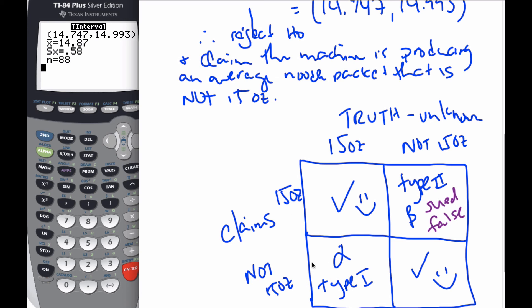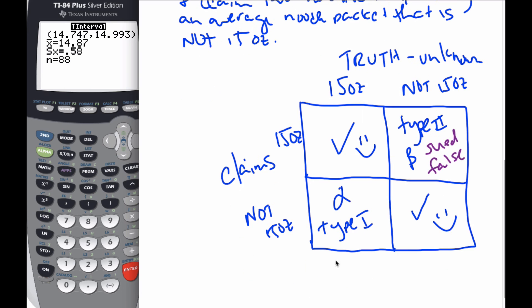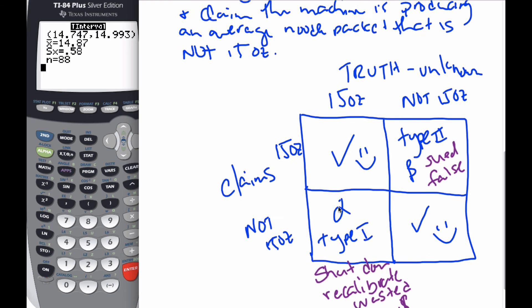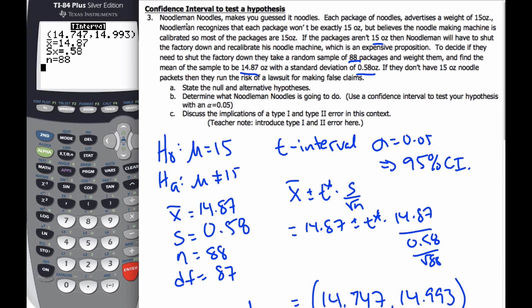If it's a type 1 error, if we claim he's not having 15 ounce packages and he is in truth doing it, then what we've done is we've shut down the machine and recalibrated. And we didn't need to. The machine was working fine and so we wasted money. That's the consequence of incorrect statistics. The thing is, we will never know. That's your introduction to type 1, type 2 error and using confidence interval to test a hypothesis.